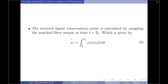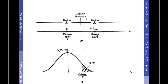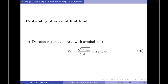This concept is taken from our previous discussion on the response of correlators for a noisy input. Let us calculate the probability of making an error of the first kind, assuming symbol 0 is transmitted. Under this condition an error is made if the receiver decides in favor of symbol 1. The decision region Z1 is represented by root of E max by 2 to infinity, so if X1 has a value anywhere between root of E max by 2 and infinity, a decision is always made in favor of symbol 1.